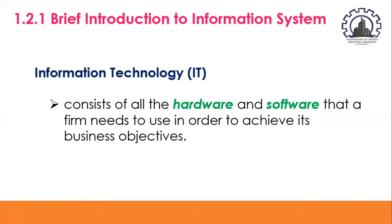Moving on to the next key area — a brief introduction to information systems. So far we've used the terms information systems and technologies informally without defining them. Information technology consists of all the hardware and software that a firm needs to use in order to achieve its business objectives. This includes not only computer machines, storage devices, and handheld mobile devices, but also software such as Windows or Linux operating systems and Microsoft Office desktop productivity suite.